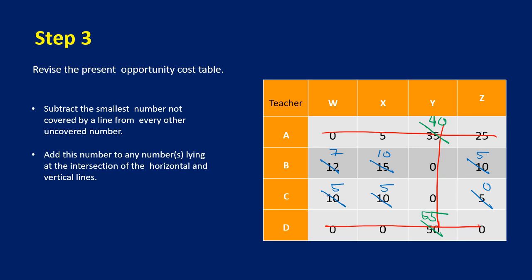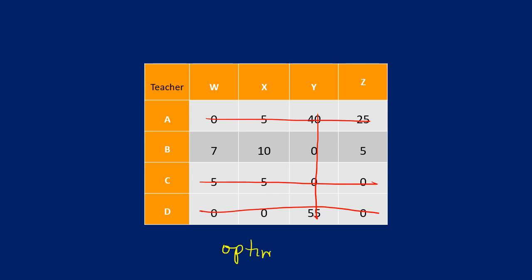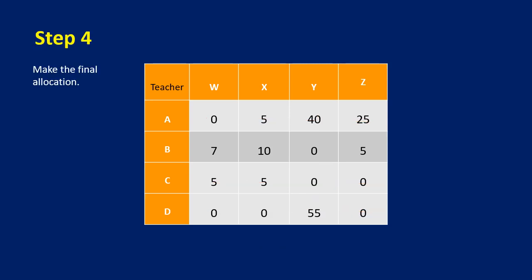Looking at the revised table, we now check optimality again by covering the zeros. We find zeros here, here, here, and here — giving us four lines, which equals the number of rows. Therefore this solution is now optimal.